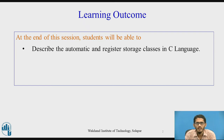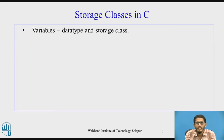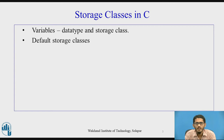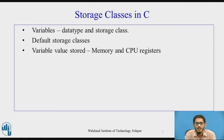We'll see what storage classes are in C language. Whenever we declare a variable in C language, we need to consider the data type associated with that variable and also one important thing: the storage class being used for storing that variable. If the programmer fails to specify the storage class, a default storage class is provided. Also important is where the variable value is stored — in memory or in a CPU register.